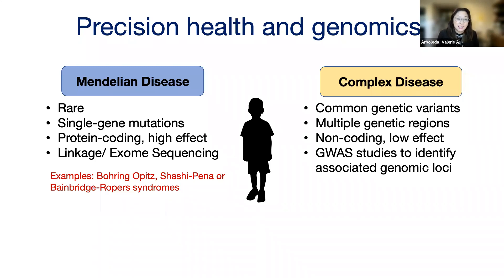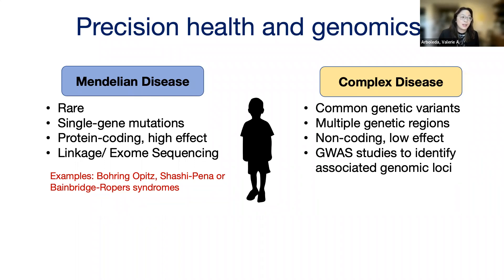We study complex disorders using genome-wide association studies. These are studies that usually involve hundreds of thousands of people. You have some people with disease, some without, and you look to see differences in the distribution of genetic variants.